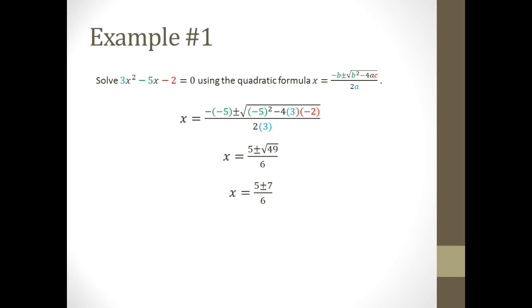Now I have 5 plus or minus 7 in the numerator. That's because I have two x-intercepts, therefore two solutions. So now it's time to separate those out. I have the positive case, 5 plus 7 divided by 6, 12 divided by 6, that's going to give me x equals 2. So one of my solutions is x equals 2.